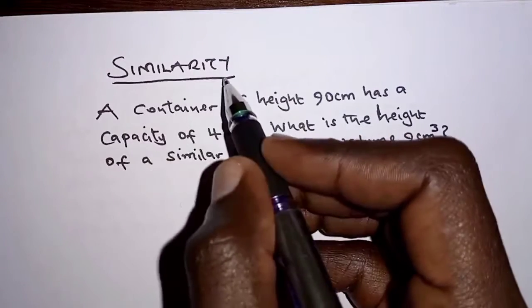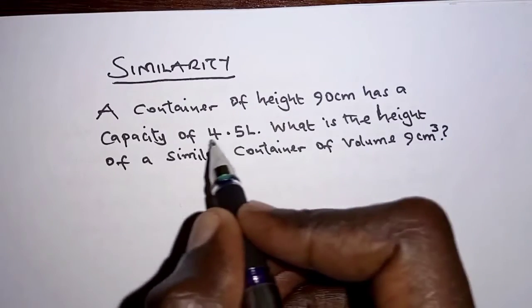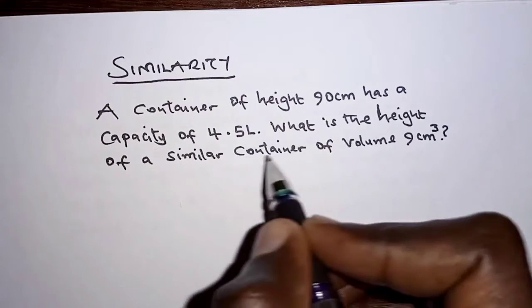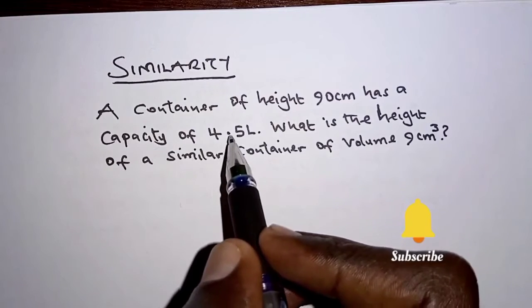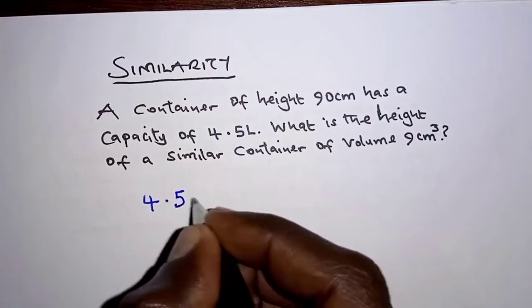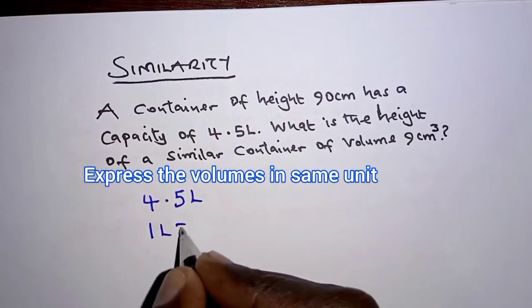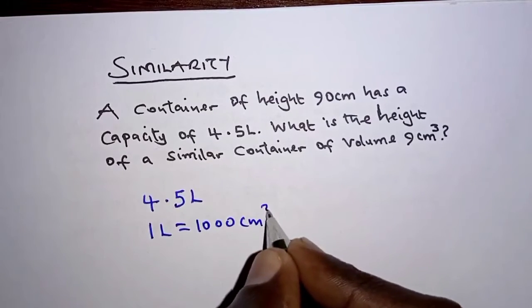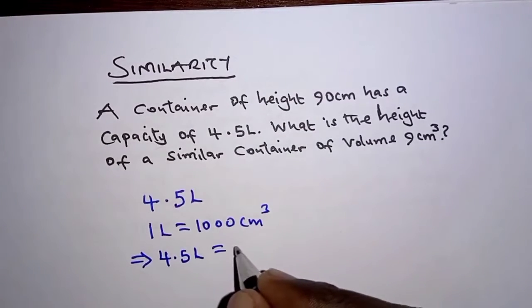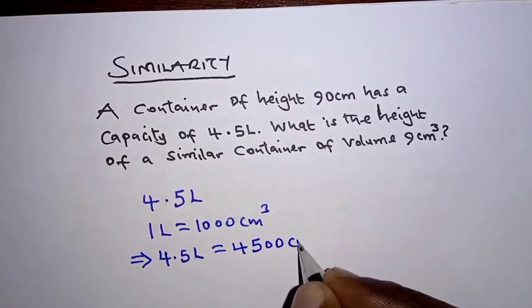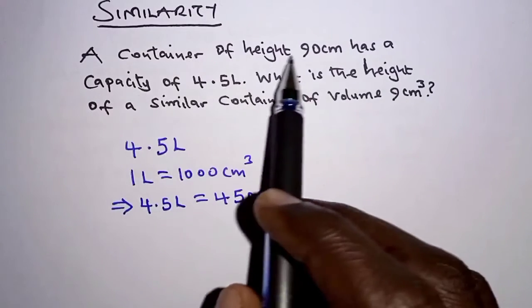The topic we are discussing today is similarity. The question reads: a container of height 90 centimeters has a capacity of 4.5 liters. What is the height of a similar container of volume 9 cubic centimeters? We are given the capacity as 4.5 liters — we need to convert this into cubic centimeters. One liter is equivalent to 1000 cubic centimeters, so 4.5 liters equals 4500 cubic centimeters.